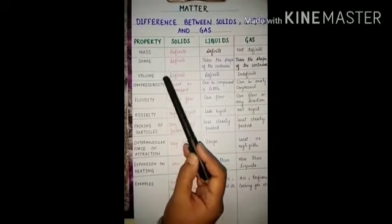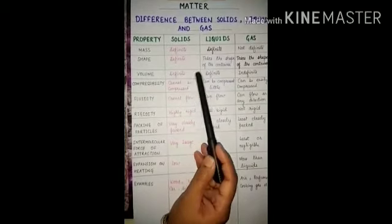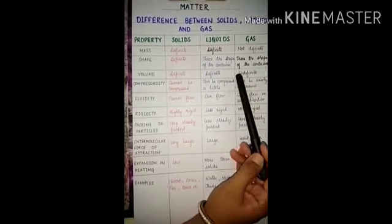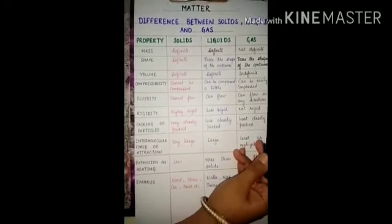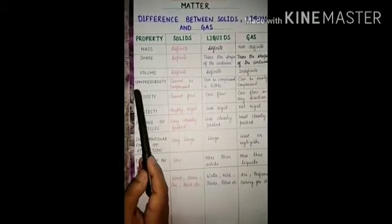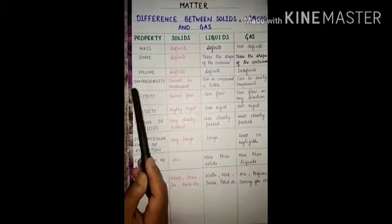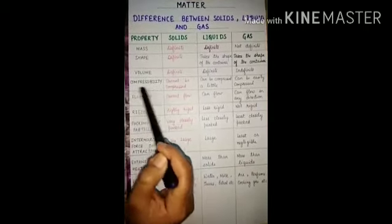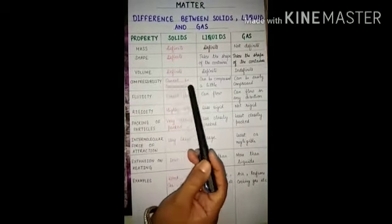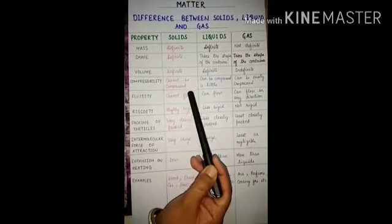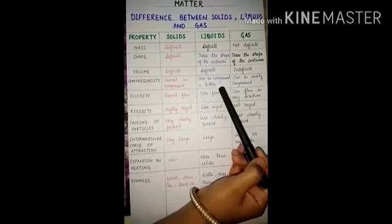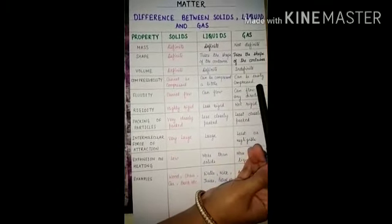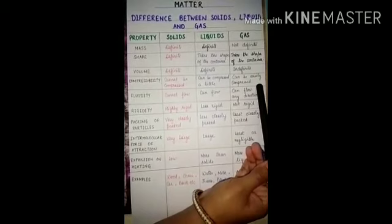Volume: solids have definite volume. Liquids also have definite volume. But in case of gases, they have indefinite volume — their volume is not definite. The fourth property is compressibility. If we pressurize these states of matter, how do they behave? Solids cannot be compressed. Liquids can be compressed a little. And gases can be easily compressed because there is a lot of space between the molecules.